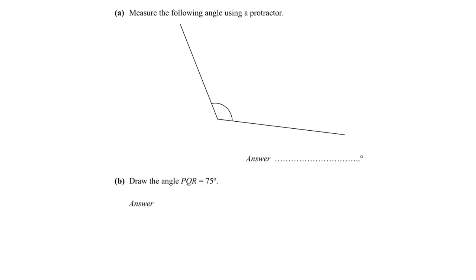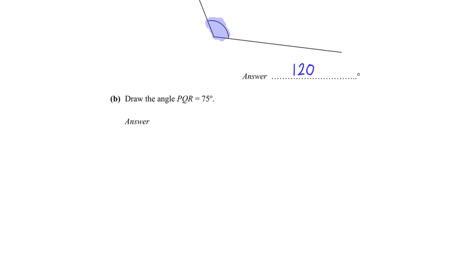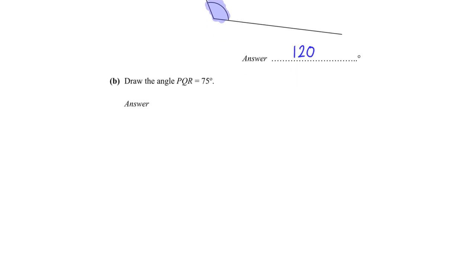Hello everyone, welcome to this video where we are required to measure the following angle using a protractor. Using a protractor, this particular angle would be equal to about 120 degrees. And to draw the angle PQR, step one: